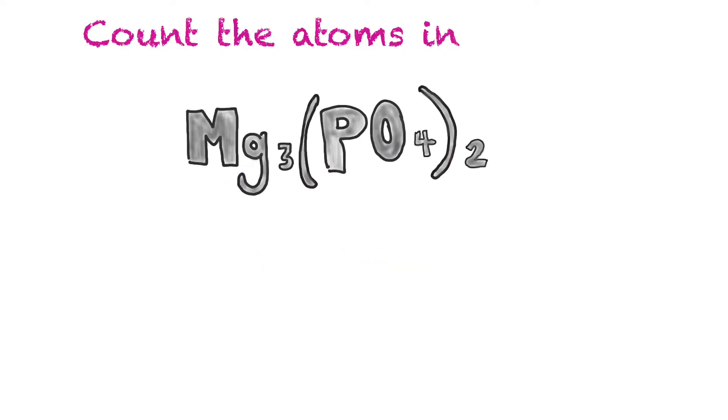Finally we have magnesium phosphate. You'll notice something quite different about this one compared to the rest: there's brackets around the PO4. Just like in math, if there's a number outside of a bracket that means you multiply everything within the bracket by that number, but for this case it's always the number to the right of the bracket.